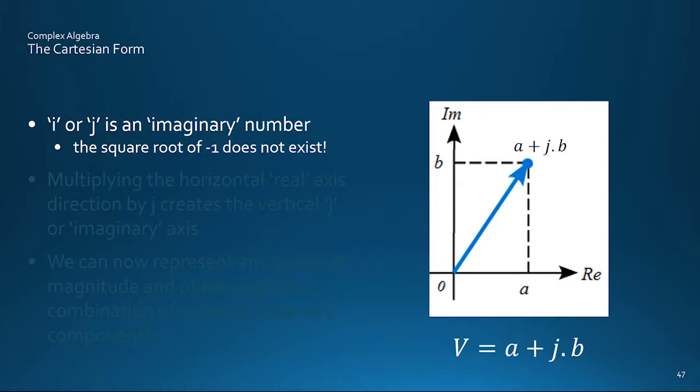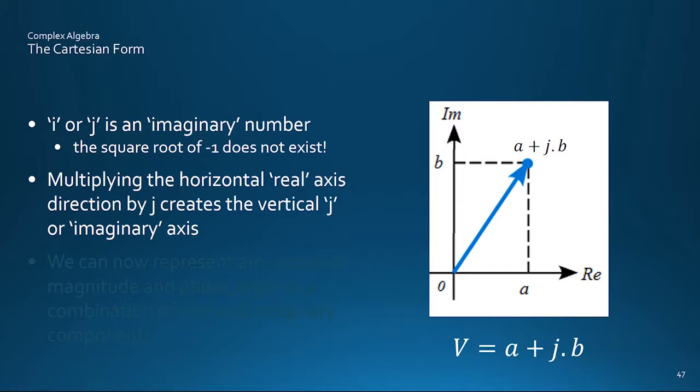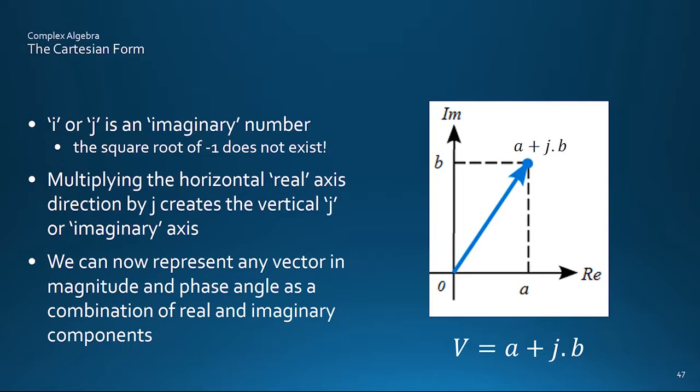Incidentally, this imaginary operator can be called either I or J. Imaginary because it doesn't really exist perhaps. Electrical engineers tend to use J and reserve the letter I for current, while mathematicians tend to call it I, maybe to align it with the IJK unit vectors they use for three dimensions.